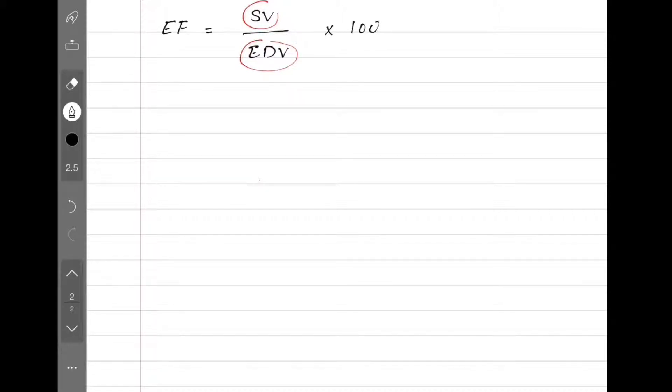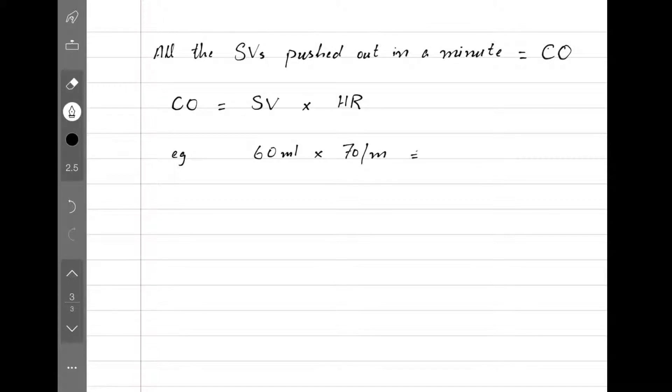This discussion makes the rest of the equations easier to understand. For example, when we look at all the stroke volumes in a minute, we get cardiac output. The equation for cardiac output is stroke volume multiplied by heart rate. Let's put in some numbers: we have a stroke volume of 60 ml and a heart rate of 70 beats per minute. If we solve this, we get 4200 ml.